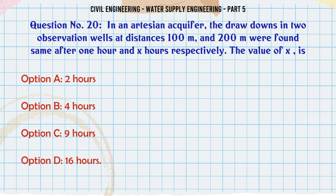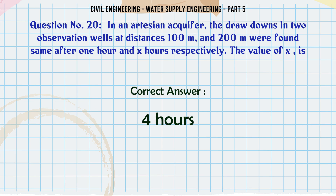In an artesian aquifer, the drawdowns in two observation wells at distances 100 m and 200 m were found to be the same after 1 hour and x hours respectively. The value of x is: A. 2 hours, B. 4 hours, C. 9 hours, D. 16 hours. The correct answer is 4 hours.